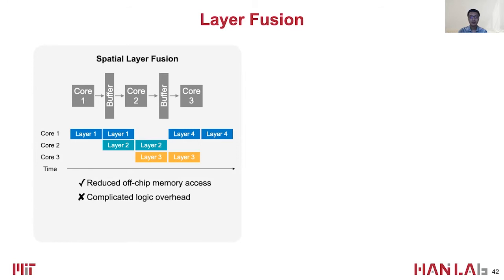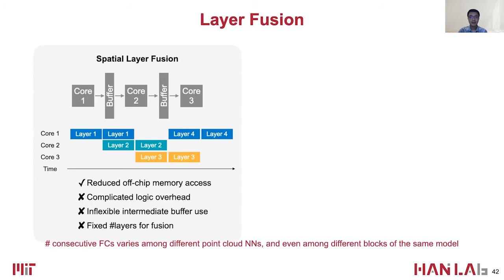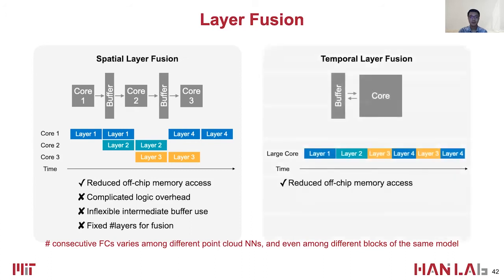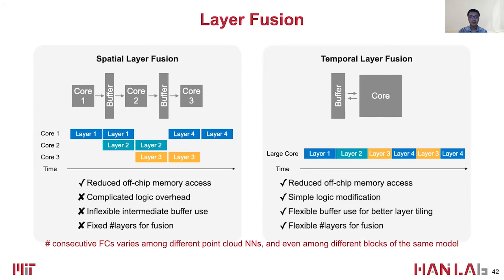However, conventional spatial layer fusion has complicated logic overhead, restricts the usage of intermediate buffers, and fixes the number of layers for fusion. The number of consecutive dense layers varies among different point cloud networks and even among different convolution blocks in the same model. Therefore, Point Tech exploits temporal layer fusion, which only requires simple logic modification and supports flexible buffer usage for better layer tiling and a flexible number of fused layers.